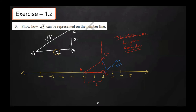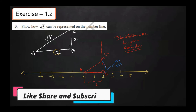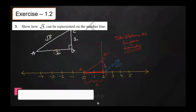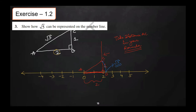For representing √7 on the number line, we first need to construct √5, then √2. We will have to draw √2 first, then √5, and accordingly take the distance for making √7.